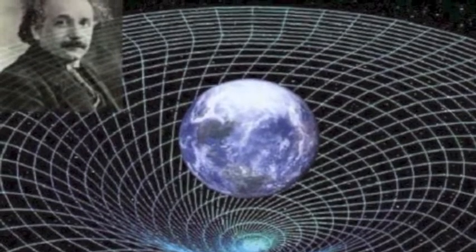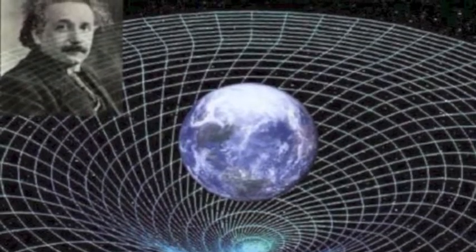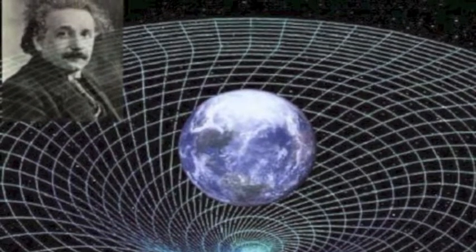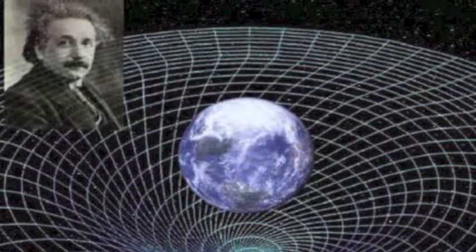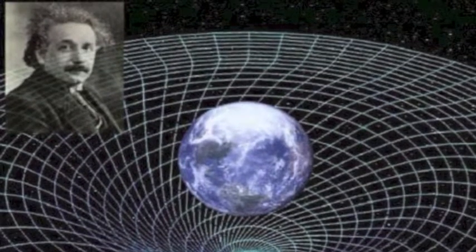The theory of wormholes is made possible by Albert Einstein's theory of general relativity. Although wormholes were only believed to exist for a thousandth of a second, studies show that we might actually be able to control them by using exotic matter.